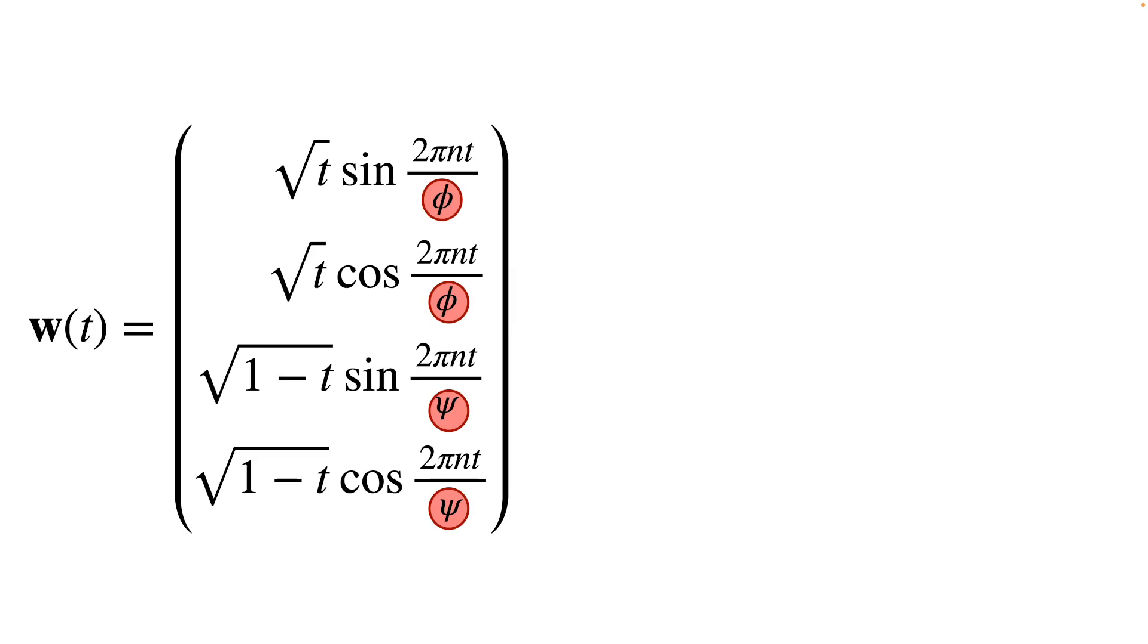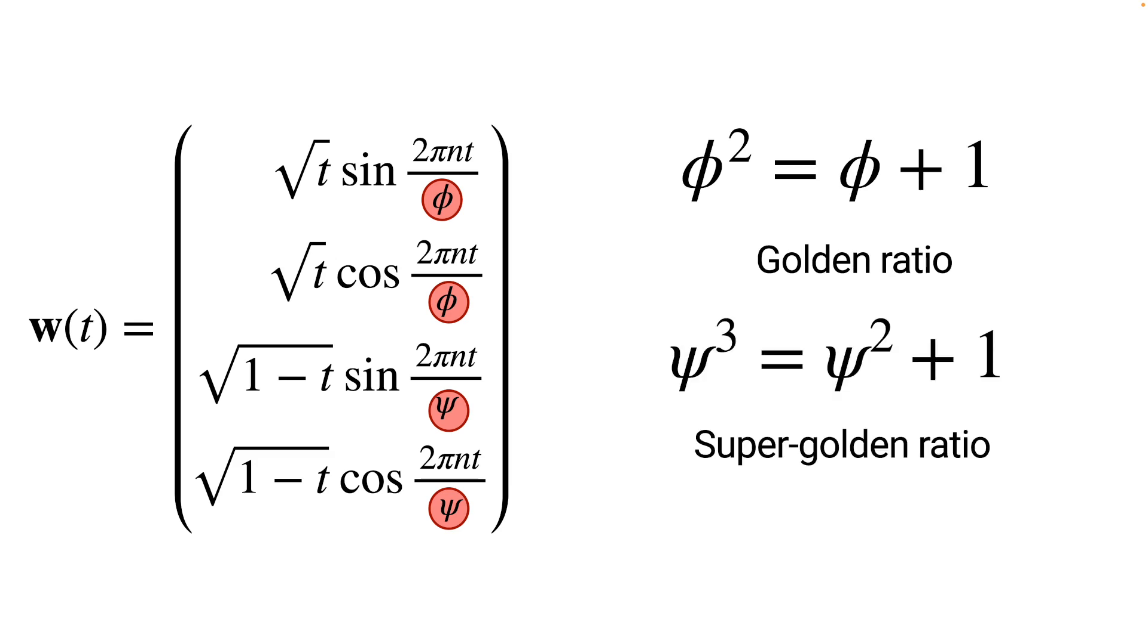It remains to discuss the magic constants. I initially expected it is best to keep one of them the golden ratio. For this choice, the super-golden ratio led to good results, hence the name super-Fibonacci spiral.